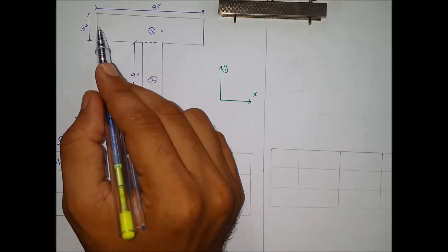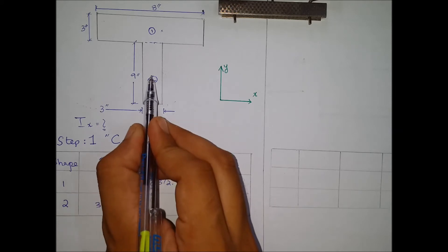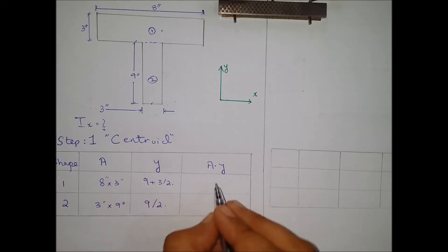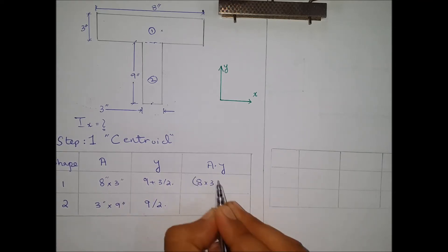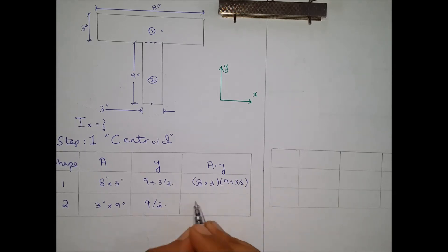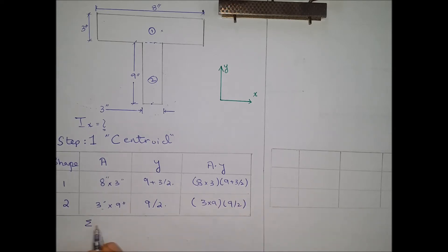From the same reference point to the centroid of shape number 1. From the same reference point to the centroid of shape number 2, that is 9 divided by 2. Multiplying the area term with the centroid distance term for each shape, and the summation of areas gives us 51 square inches.